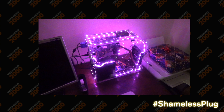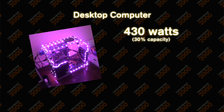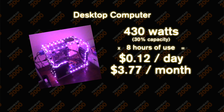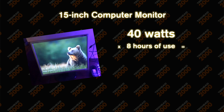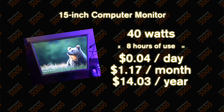Next up, computers. I'm going to use my crystal box as an example. The power supply says 430 watts on it, but this thing is not using 430 watts continuously. Assuming this computer is running at about 30% of its total capacity for 8 hours a day, it comes out to about 12 cents per day, $3.77 a month, and $45.23 per year. Your monitor, assuming the brightness is turned up all the way, is probably using around 40 watts. For 8 hours a day, that adds up to 4 cents per day, $1.17 per month, and $14.03 per year.